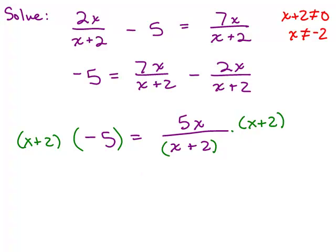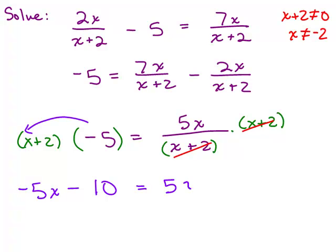On the left side, using the distributive property: negative 5 times x is negative 5x, and negative 5 times 2 is minus 10. On the right-hand side, multiplying by (x+2) cancels the denominator, leaving just 5x. Now I have negative 5x on the left and positive 5x on the right, so I add 5x to both sides.